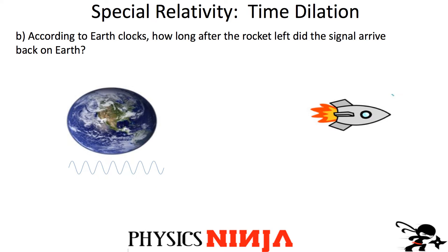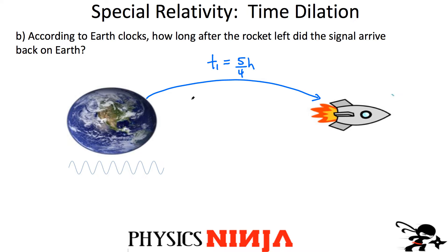Now here's Question B. According to Earth's clock, how long after the rocket left did the signal arrive? We just calculated the time as measured by Earth when the signal was sent — that's T₁ = 5/4 hours. Now we know the signal travels from the rocket to Earth, and according to someone on Earth, that signal travels at the speed of light. That's true for any observer in any reference frame.